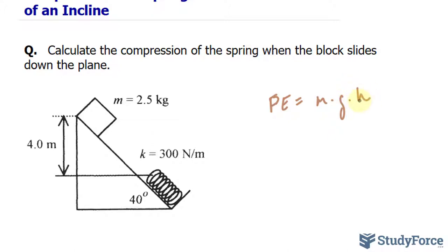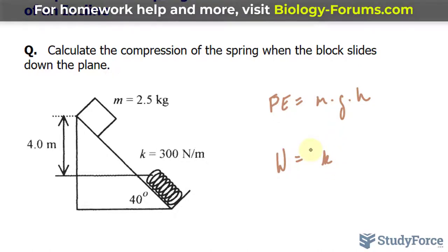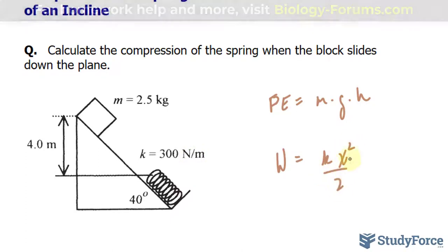This potential energy will go into the work required to compress the spring. The work required to compress the spring can be calculated using the following, where we have work is equal to k, which represents the constant for that specific spring. And that's given in the question as 300 newtons per meter times x to the power of 2 over 2.